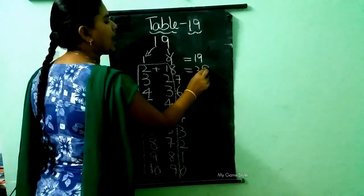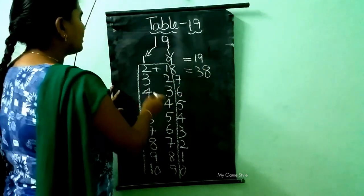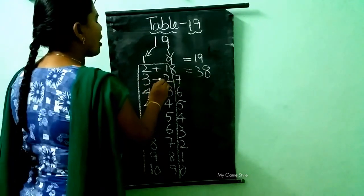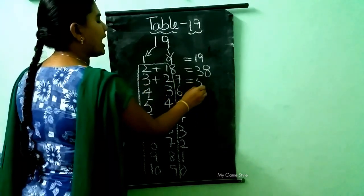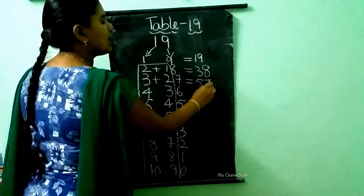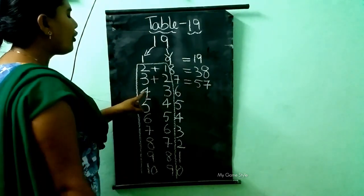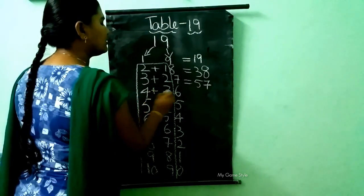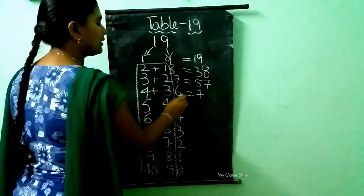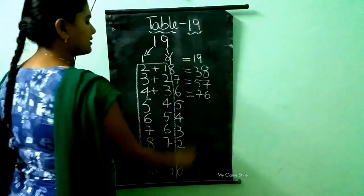So we need to write the 8 number as it is. Then next 3 plus 2. How much, children? 5. Here 7, as it is. Then 4 plus 3. How much, children? 7. Then 6, as it is.